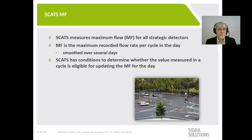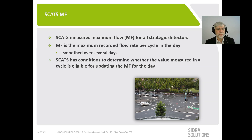SCATS MF, on the other hand, is measured by the SCATS system for all strategic detectors, and it's the maximum recorded flow rate in any cycle in the day. To ensure the value doesn't jump around too much from day to day, it's smoothed over several days. SCATS has conditions within the software to determine whether the value measured in a cycle is eligible for updating the MF for that day.